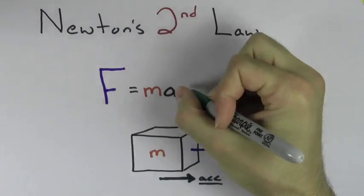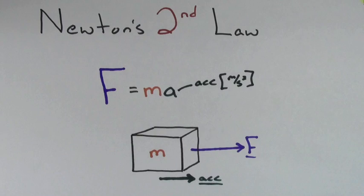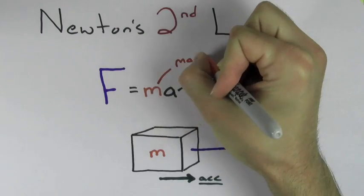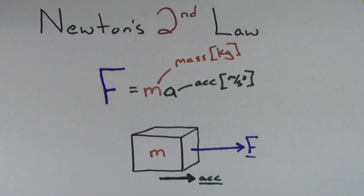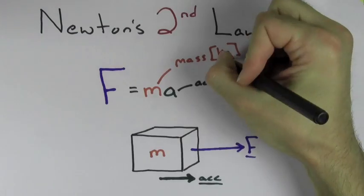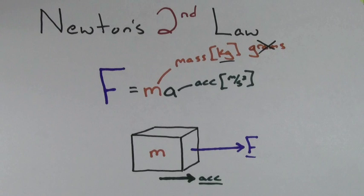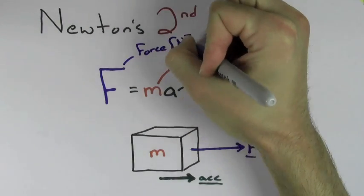Acceleration is measured in meters per second squared. Mass is measured in kilograms — be careful, it's kilograms, not grams. That means that force is measured in kilogram meters per second squared, but that sounds kind of strange to say a lot, so we say that a kilogram meter per second squared is a Newton.